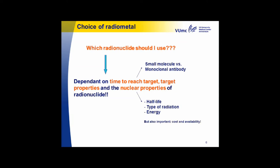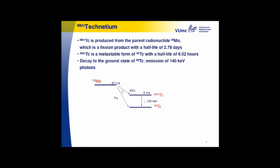The choice is mainly depending on the time to reach your target, especially looking at the physical half-life of your radionuclides. The target properties are important — for instance, if you have an internalizing antibody, you shouldn't use iodine because it will be released from the tumor and come back into the bloodstream. Other things to consider are the nuclear properties: the half-life, the type of radiation, whether you want SPECT or PET imaging, what is available in the clinic, the energy of the radionuclides, and also cost and availability.